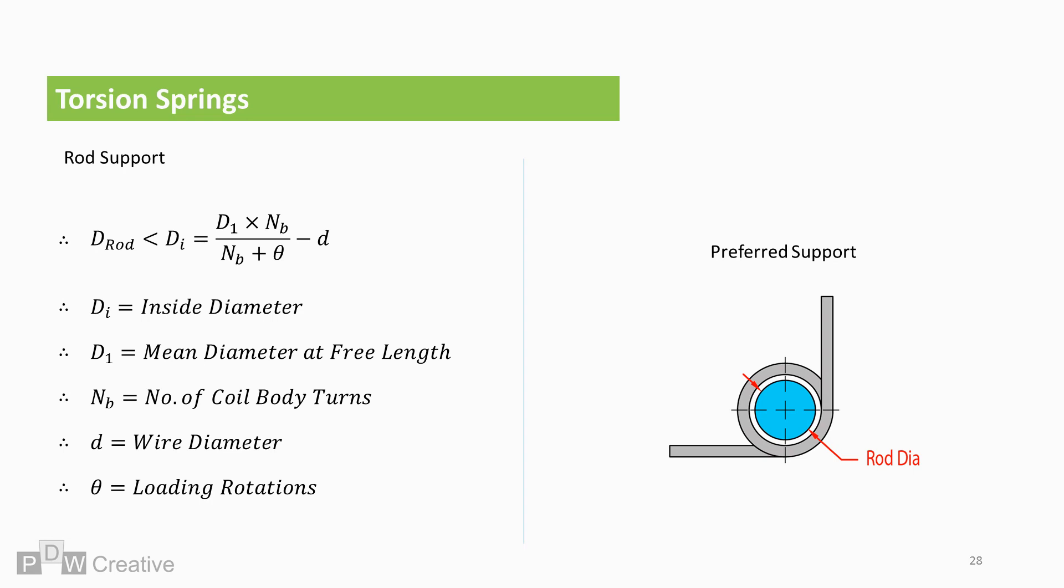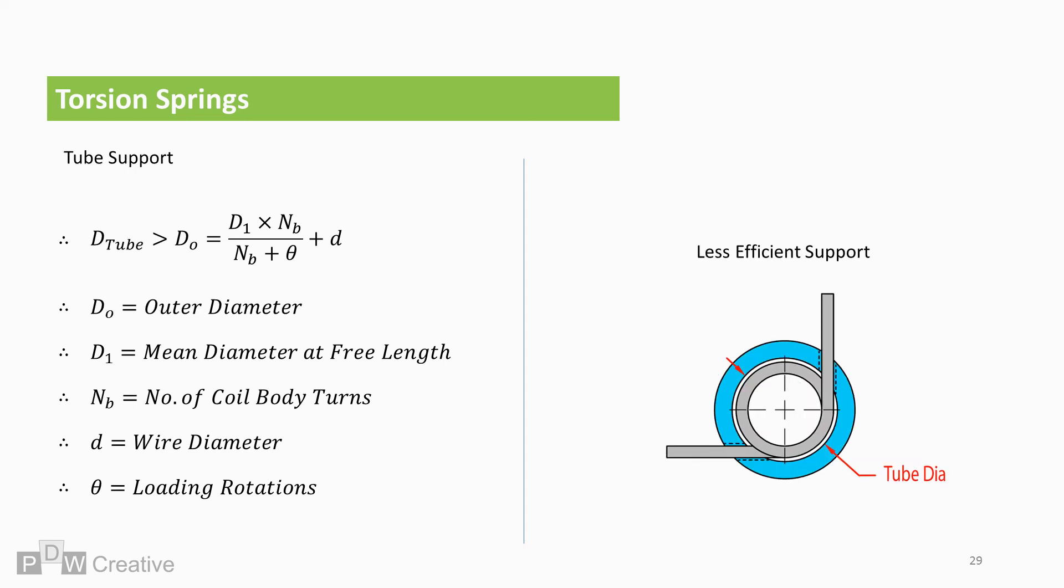And just to recap, the symbols are shown on screen. Any tube support must be in clearance to the outer diameter, and if we are only rotating in line with the coils, then D tube is greater than DO equals D1 times NB over NB plus theta plus D.